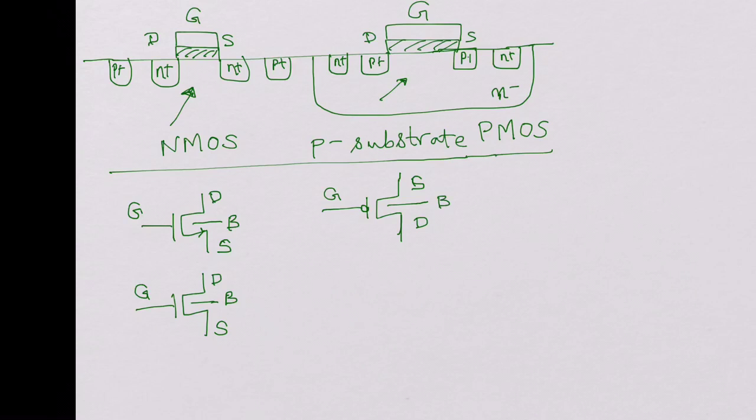And sometimes there is an arrow that is shown going in towards the gate here from the source. Let's not put the arrow in this case, just put the normal digital PMOS symbol. So drain, source. And bulk may or may not be shown, but let's show it here in this case.